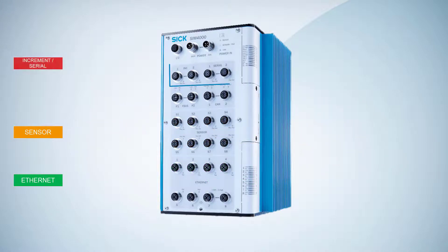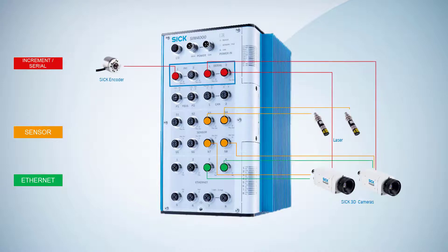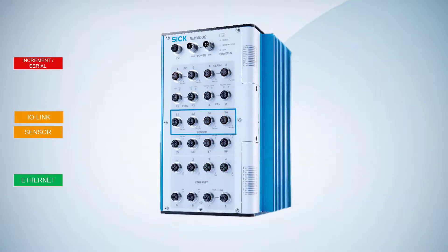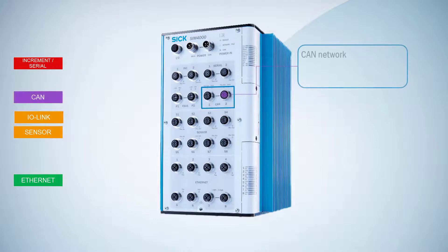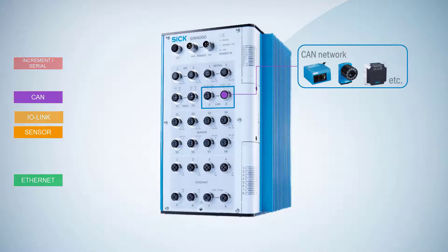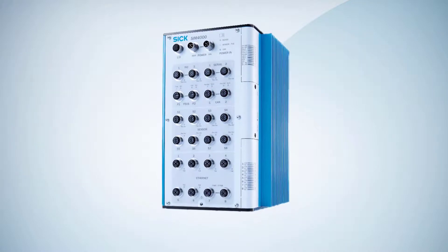Position information for the 3D cameras is available from up to four configurable encoder and serial ports. Four IO-Link master interfaces serve to receive data from connected IO-Link sensors, for example to measure distance or height. A complete SICK CAN network can also be set up, allowing aggregation of any type of ID code from connected SICK laser or image-based code readers or RFID devices.